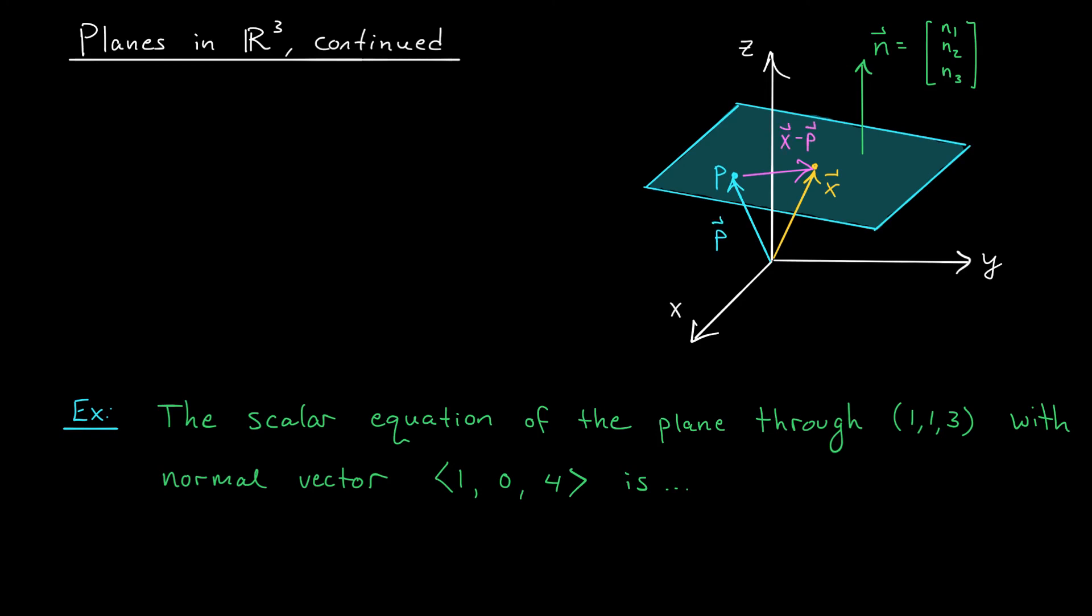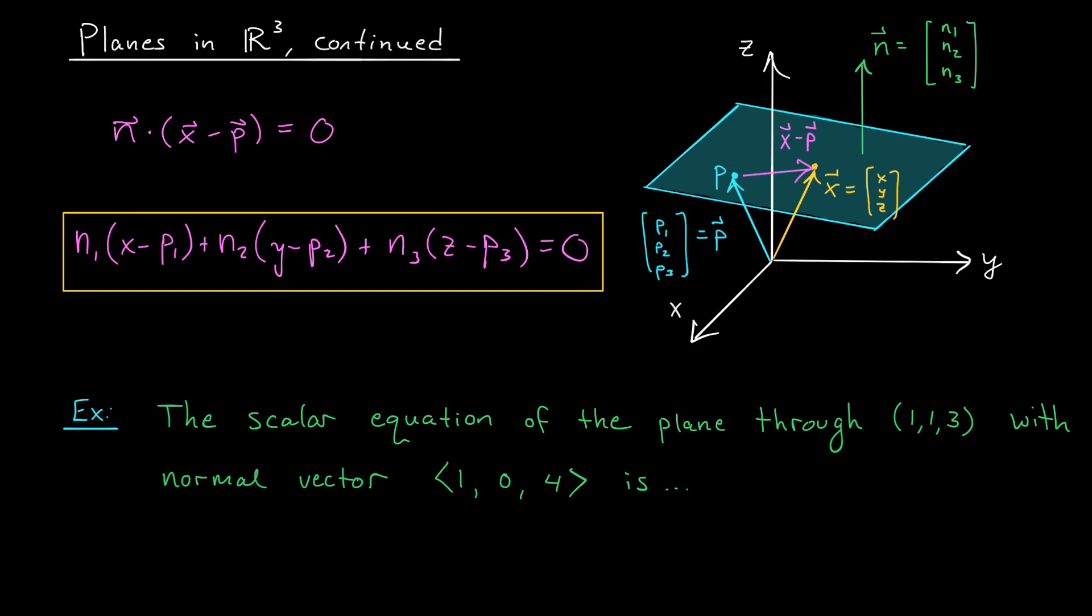So our plane consists of all X, such that N dot X minus P is equal to 0. Just like on the last slide, we can now expand our dot product formula to get the scalar equation for our plane. If the coordinates for this X vector are XYZ, and the coordinates for my P vector are P1, P2, P3, then the equation of my plane is N1 times X minus P1 plus N2 times Y minus P2 plus N3 times Z minus P3 is equal to 0. This, folks, is the general scalar equation for a plane in R3.